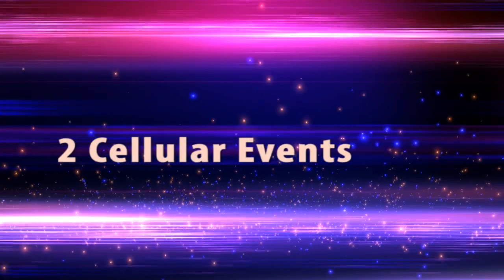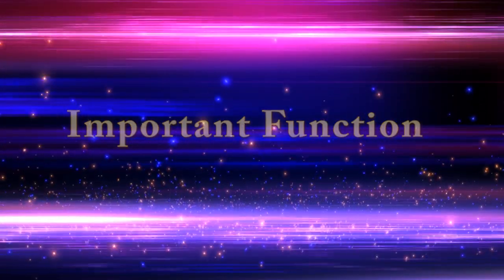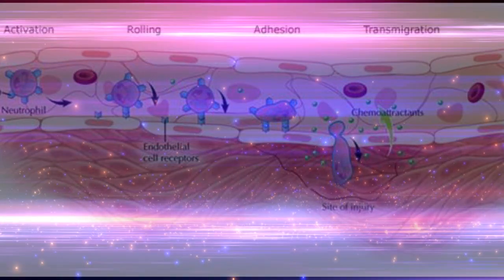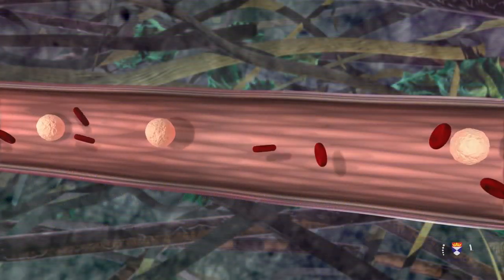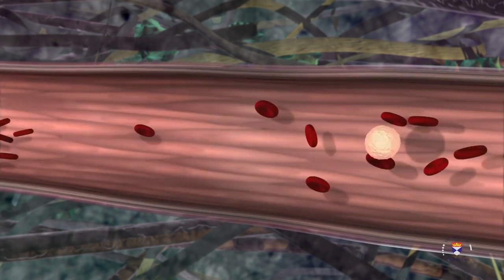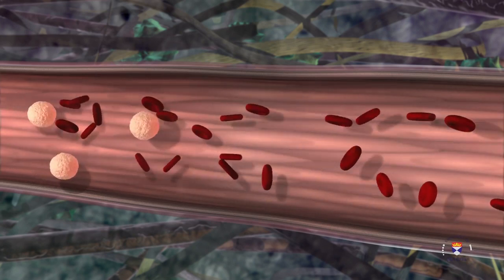Cellular events in acute inflammation: An important function of the inflammatory response is to deliver leukocytes to the site of injury and to activate them. Leukocytes normally flow rapidly in the blood, and in inflammation they have to be stopped and brought to the offending agent or the site of tissue damage, which are typically outside the vessels.